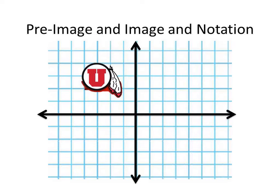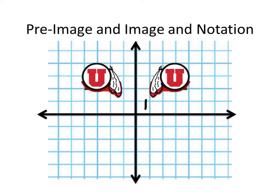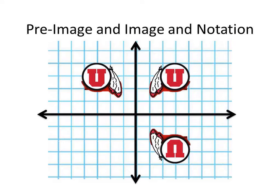Just real quick, the image and pre-image notation. We could look at this and just call it U — that's our pre-image. But the image has that mark, and we call it prime. So this would be U prime, meaning it's been reflected one time — it's gone through some kind of transformation once. And then this one would be double prime because it's the second image.